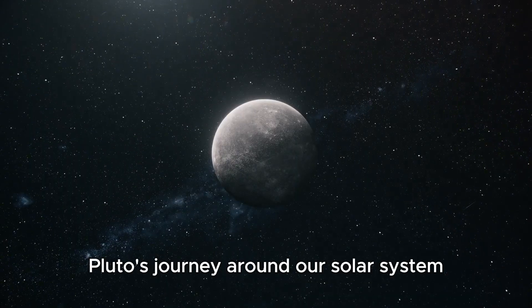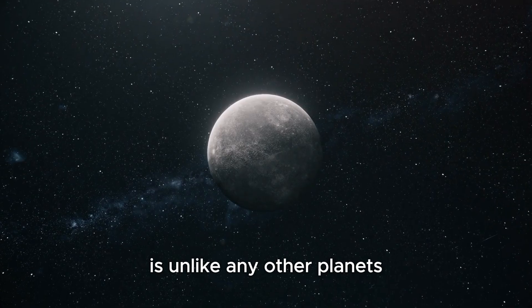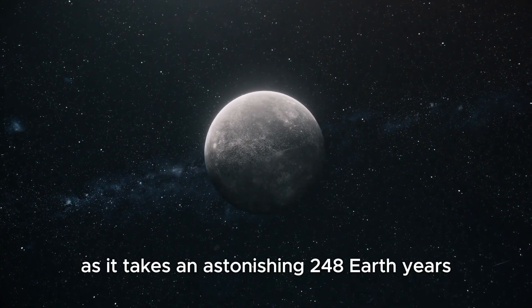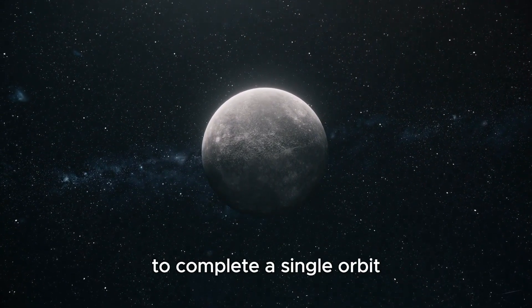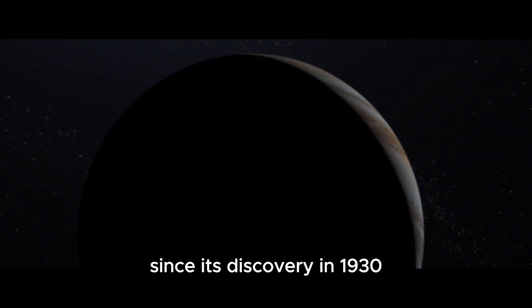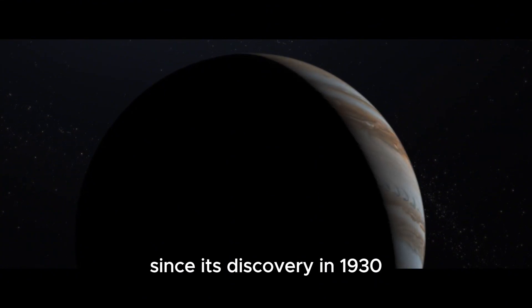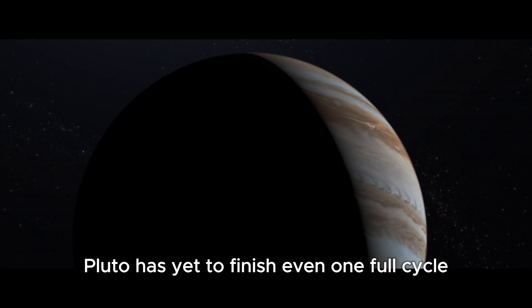Pluto's journey around our solar system is unlike any other planets, as it takes an astonishing 248 Earth years to complete a single orbit. Since its discovery in 1930, Pluto has yet to finish even one full cycle.